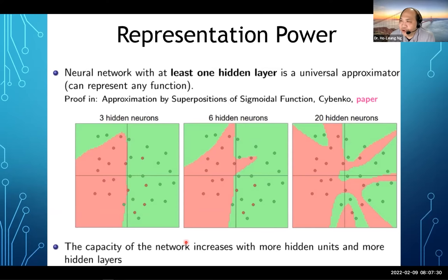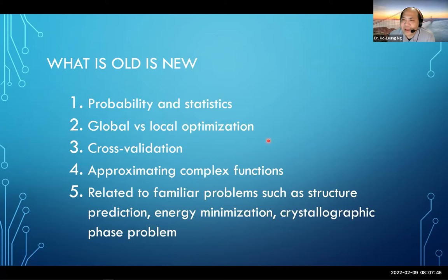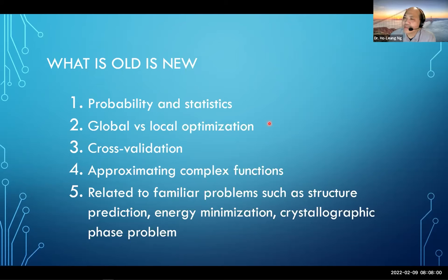The larger your neural network, the more accurately one can approximate your function. This brings up a lot of problems and topics that crystallographers and structural biologists are already well-versed with — in fact, areas where we might have more expertise than some current practitioners of machine learning. These include the issues of using probability and statistics, global and local optimization, and how to avoid getting stuck in areas of local optima.